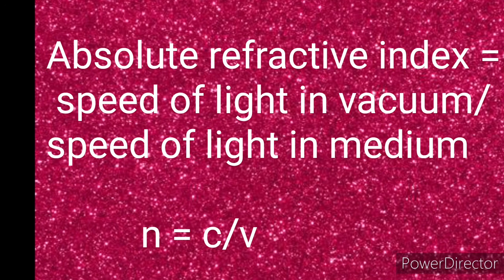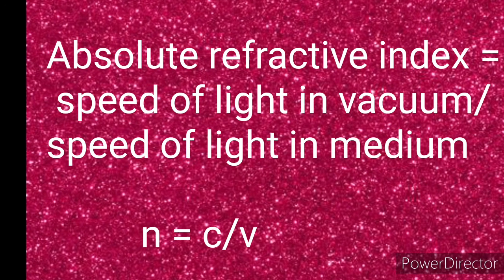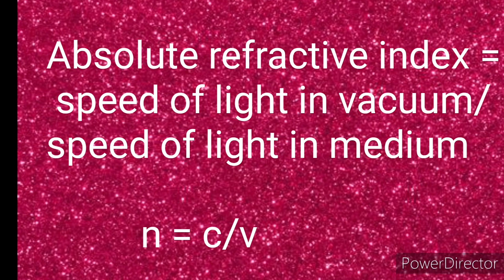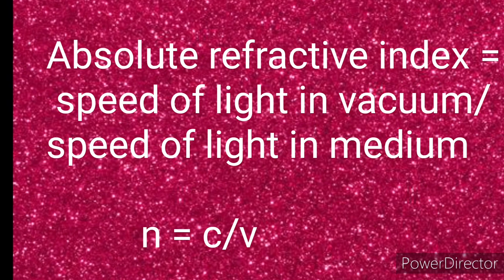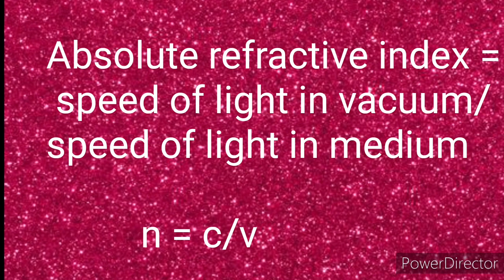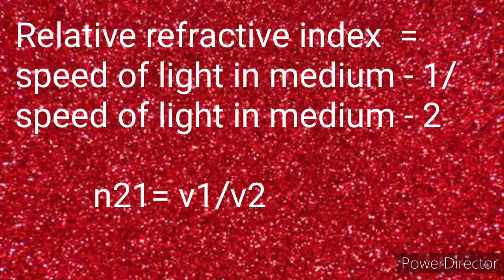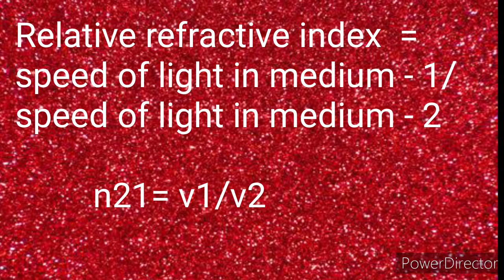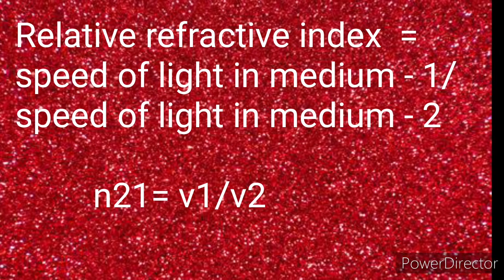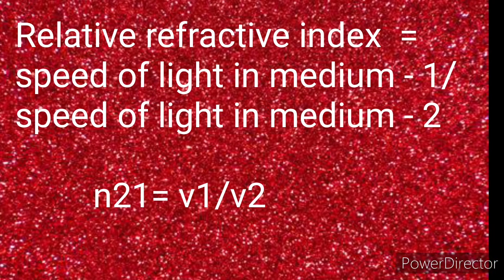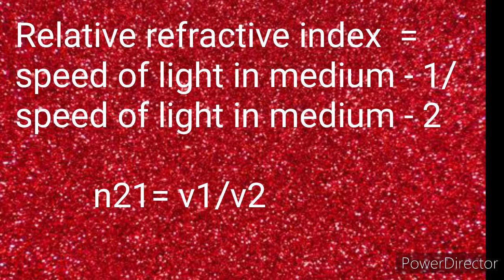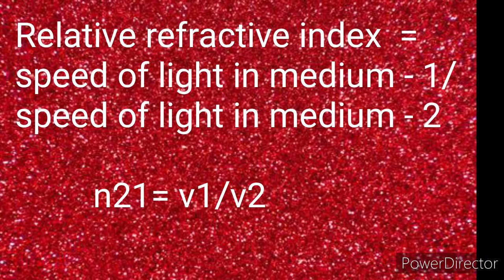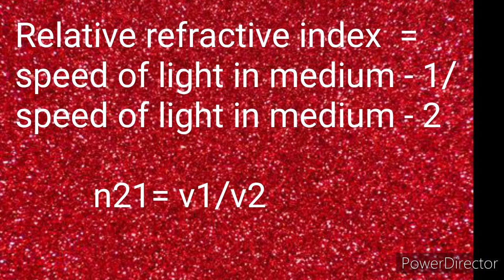The absolute refractive index is the ratio of the speed of light in vacuum to the speed of light in the medium. Similarly, the relative refractive index is the ratio of the speed of light in the first medium to the speed of light in the second medium.